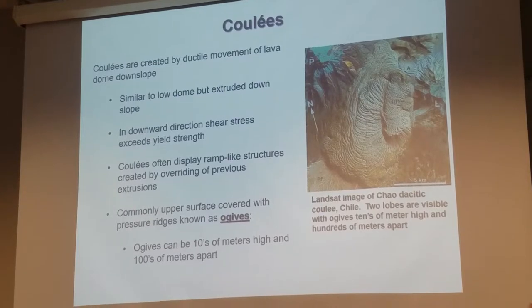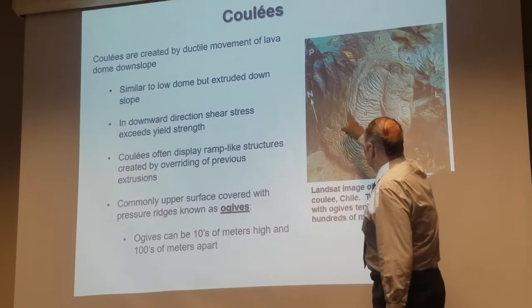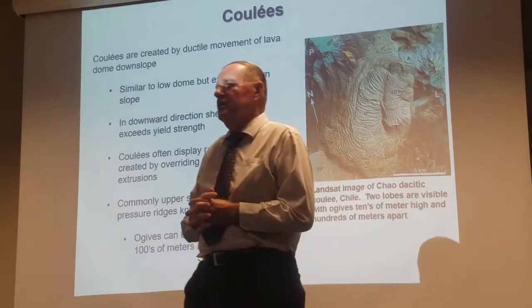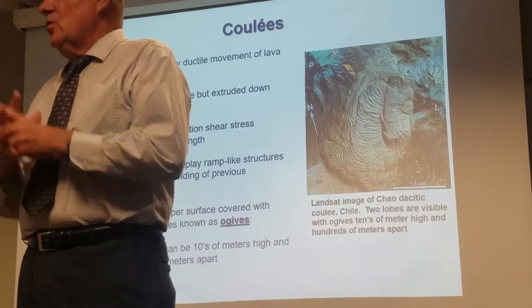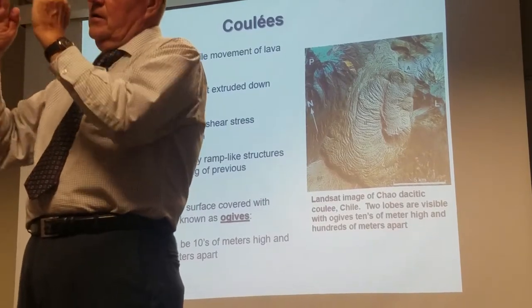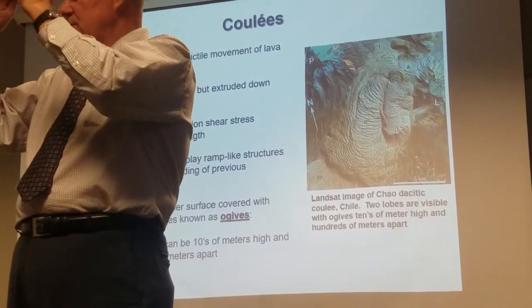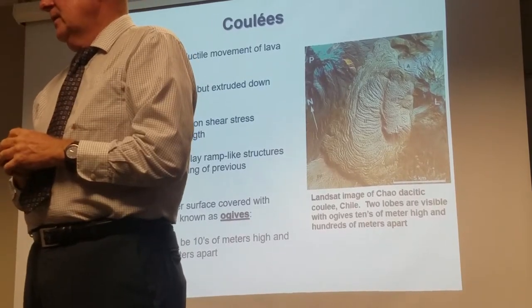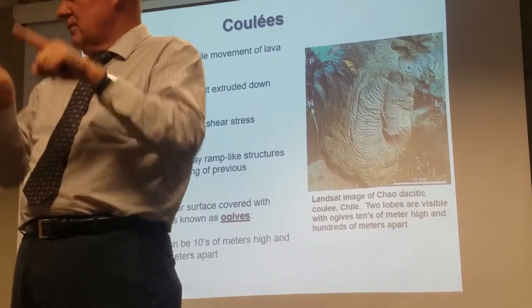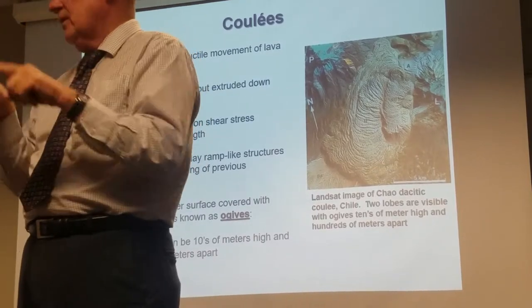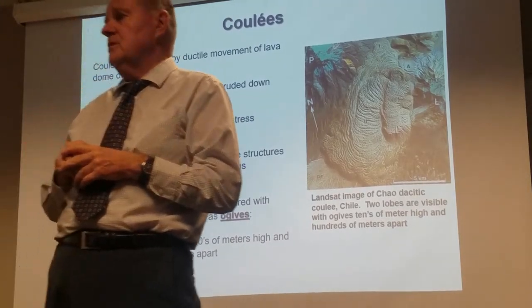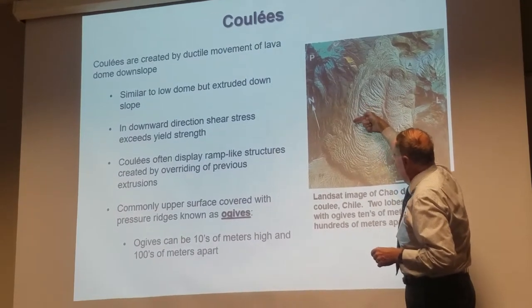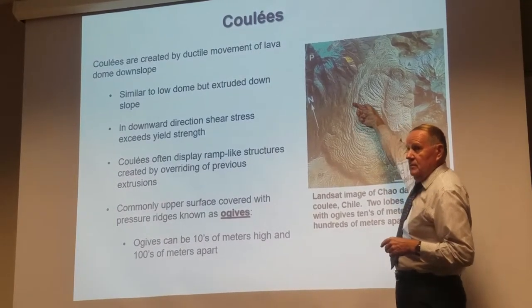An ogive is a term meaning basically these curved surfaces. I've heard the term more often as a military term — it describes the curvature of a bullet or projectile. That shape coming up to a point is called an ogive, with different classes of different radii of curvature giving different flight characteristics. But in this context, the pressure ridges on these coulees are sometimes referred to as ogives.